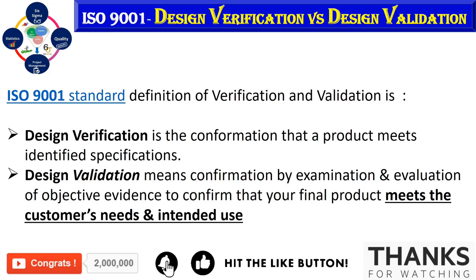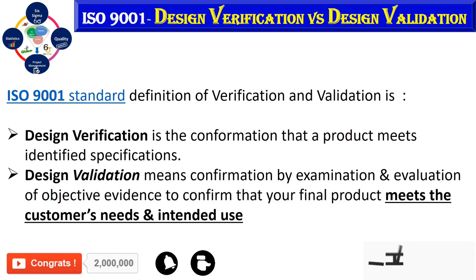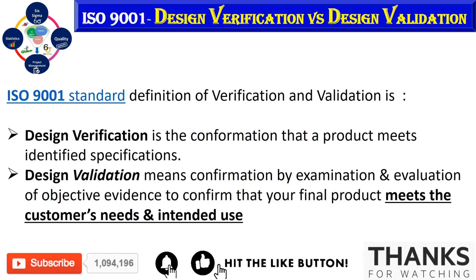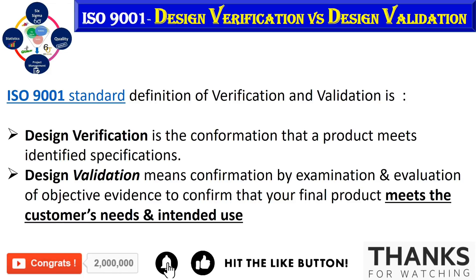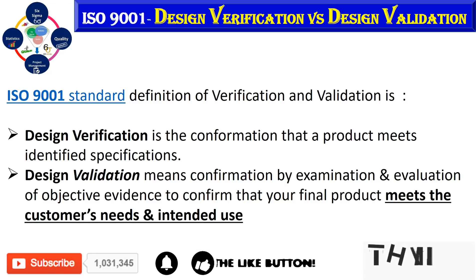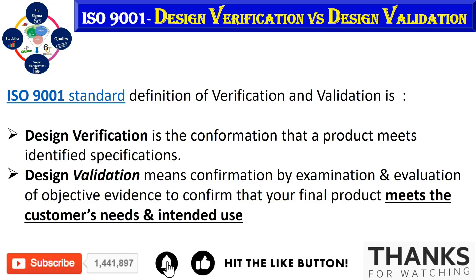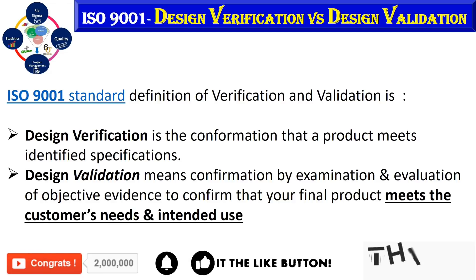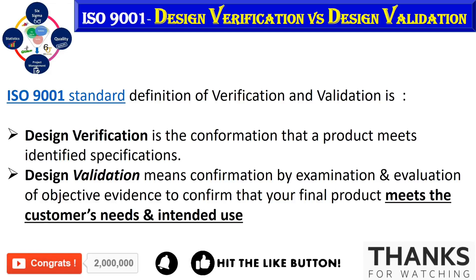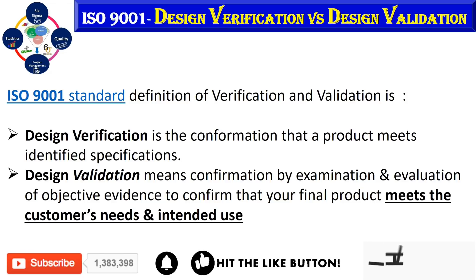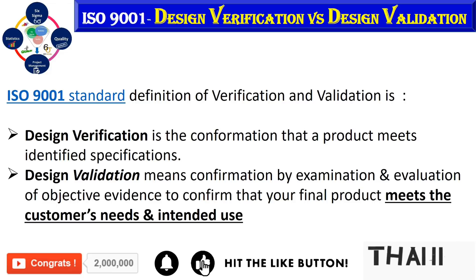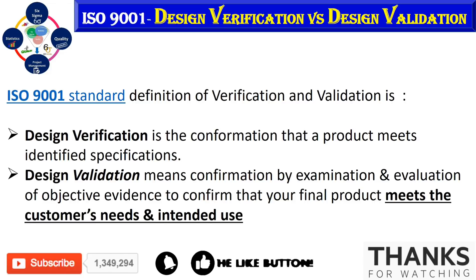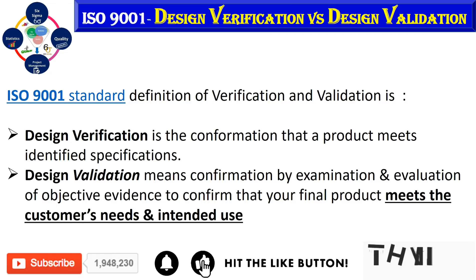Verification and validation are independent procedures that are used together for checking that the product, service, or system meets the requirement or specification and fulfills its intended purpose. They are critical components of the ISO 9001 family. We start with design verification and then end up validating your customer needs.